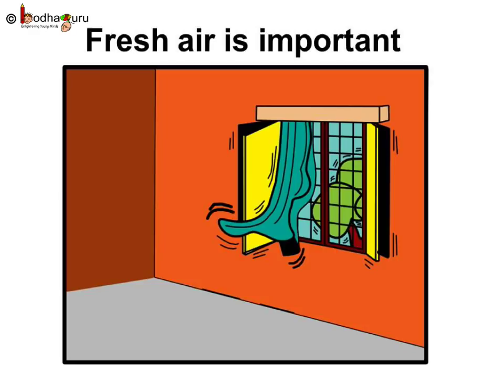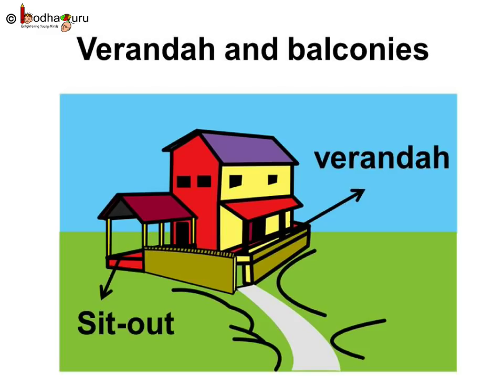Just like sunlight, fresh air is also important. So let the fresh air flow in through the windows. This keeps the house cool and fresh. In the winters we like to sit in the sunlight and in the summers we like the fresh breeze of morning and evening. To enjoy fresh air and sunlight, we can use veranda, balconies and open courtyard as a sit-out.